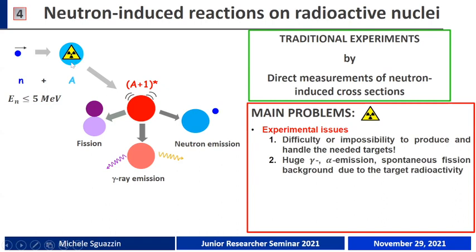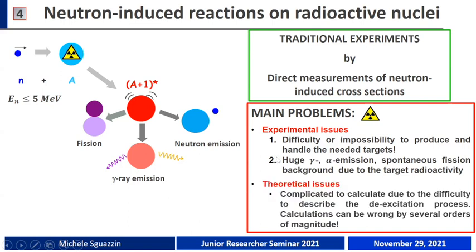At the same time, these targets are also a source of huge background — for example, gamma rays, alpha particles, but also a spontaneous fission background that can make it very difficult to detect the products coming from the decay of the compound nucleus. The problem is also theoretical, because the description of the excitation process of the compound nucleus is quite complicated, and the theoretical predictions have huge uncertainties.